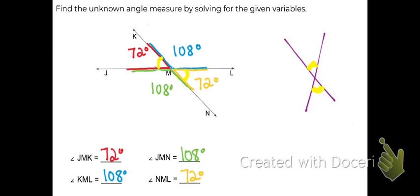But you could have also used the fact that these are supplementary angles. The green and yellow angles form a straight line, so we know that they are supplementary and also add up to 180. 108 plus 72 is 180.